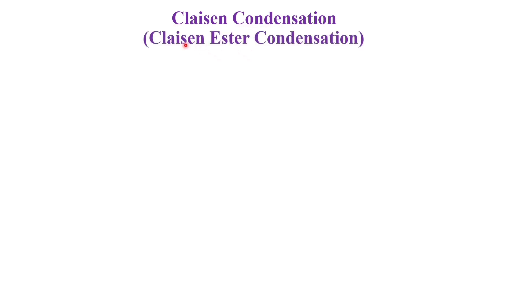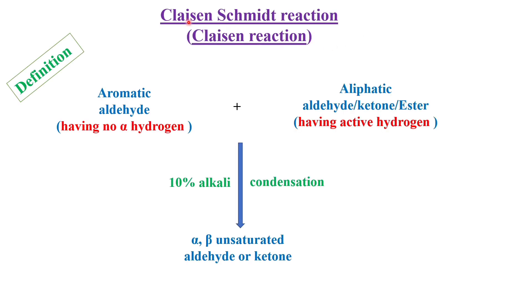Dear students, now we are going to see Claisen condensation, otherwise called Claisen ester condensation. We have already seen the Claisen-Schmidt reaction. In that reaction, aromatic aldehydes having no alpha hydrogen atom combine with aliphatic aldehydes or ketones having alpha hydrogen atoms and undergo condensation in the presence of 10% alkali, giving alpha,beta-unsaturated carbonyl compounds.